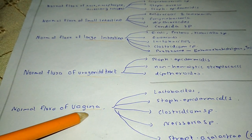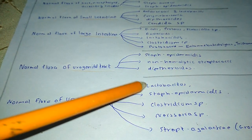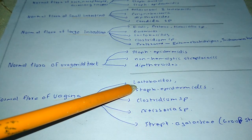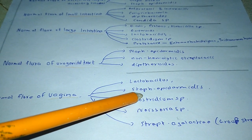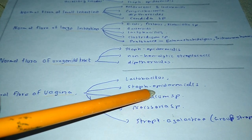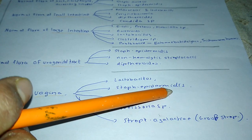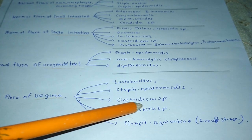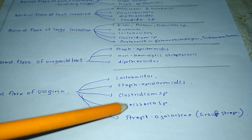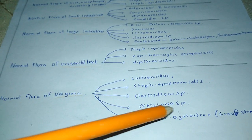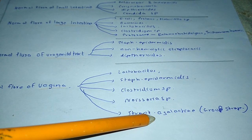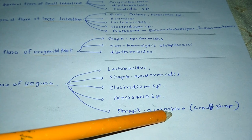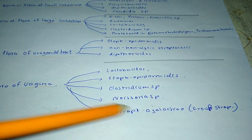The normal flora of the vagina includes Lactobacillus, Staphylococcus epidermidis, Clostridium species, Neisseria species, and Streptococcus agalactiae.